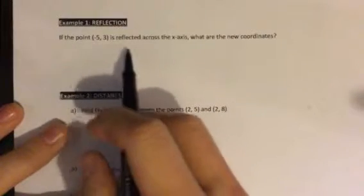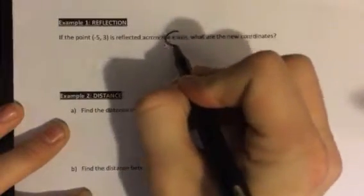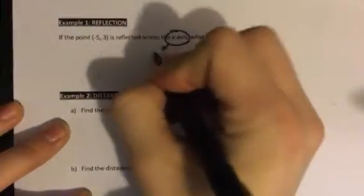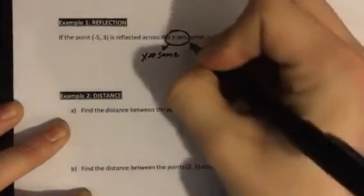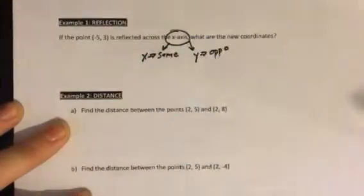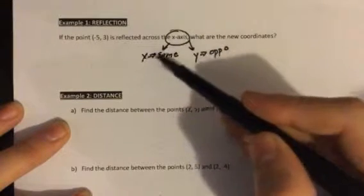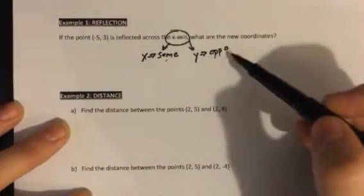So number one is a reflection problem. It says if the point (-5, 3) is reflected across the x-axis, what are the new coordinates? So whenever we reflect across the x-axis, make sure we circle that, that means the x-coordinate stays the same and the y-coordinate is opposite. Whatever axis we're reflecting over, the x or that coordinate, so the x here in this case stays the same and the y is opposite.